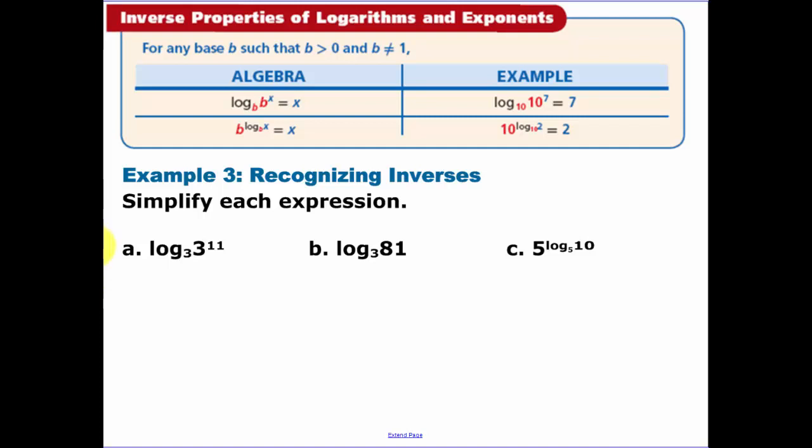Inverse properties of logarithms and exponentials. Remember, logarithms and exponentials are inverses of each other. So when I have a log base b of b to some power x, they undo each other. The logarithm base b and the exponential of b to the x undo each other and you get x as your output. Same thing here when you have a logarithm in your exponent. b to the logarithm base b of x, those cancel and we get x.